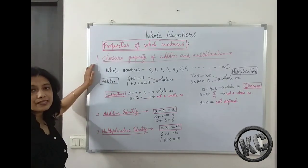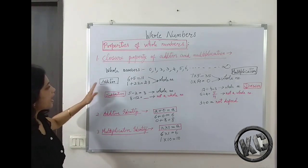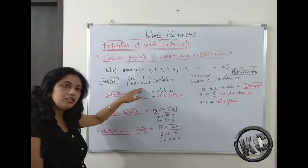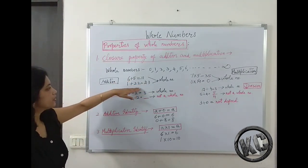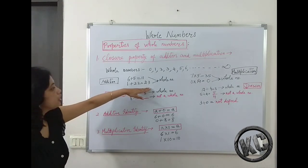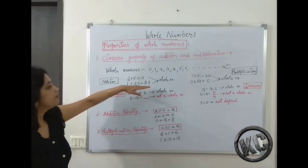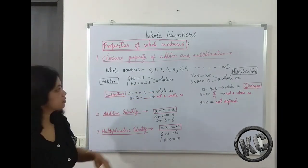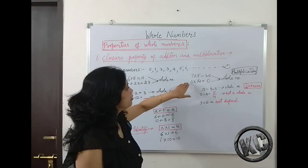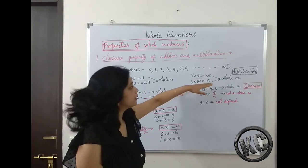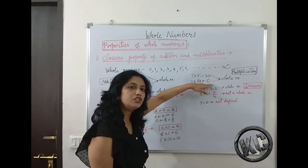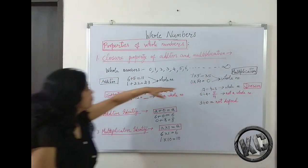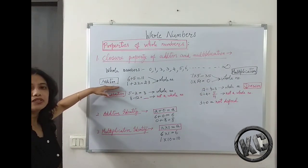Closure property of addition and subtraction. When we add any two whole numbers, we get a whole number. Here 6 plus 5 is 11, and 1 plus 22 is 23. So when we add two whole numbers we always get a whole number. This is true for large numbers also. Similarly, in multiplication, when we multiply two whole numbers we get a whole number — like 0 multiplied by 14 gives 0, which is a whole number. So it is said that whole numbers are closed under addition and multiplication.